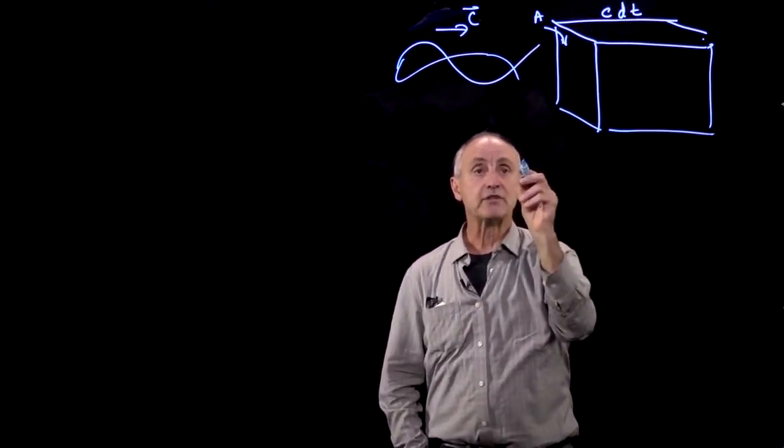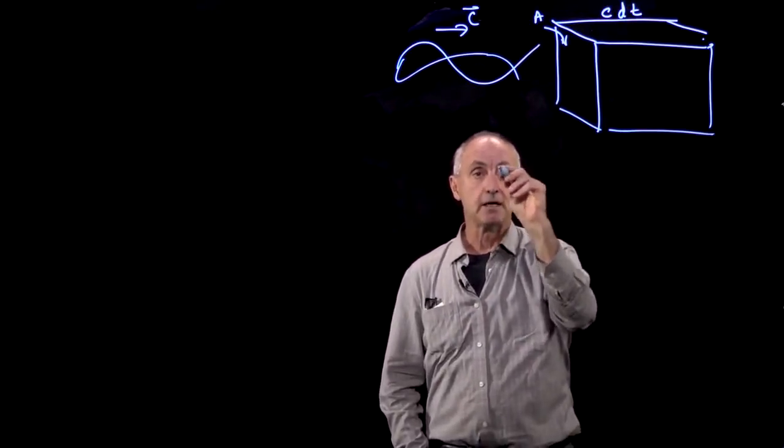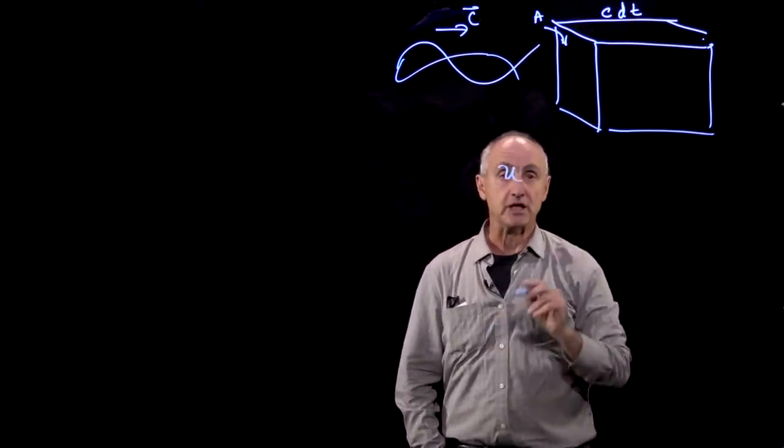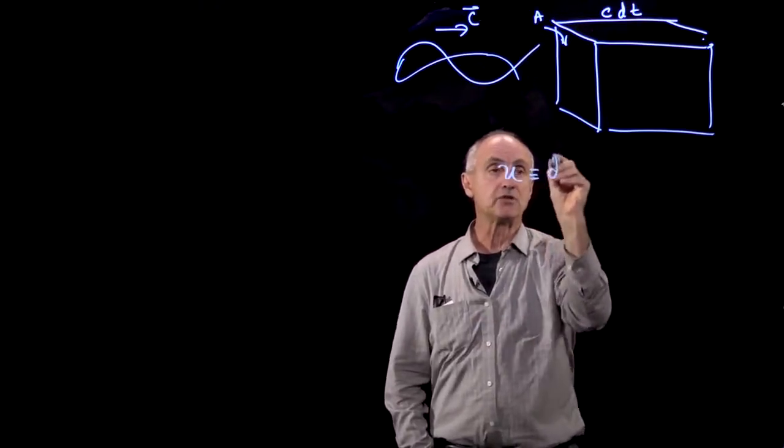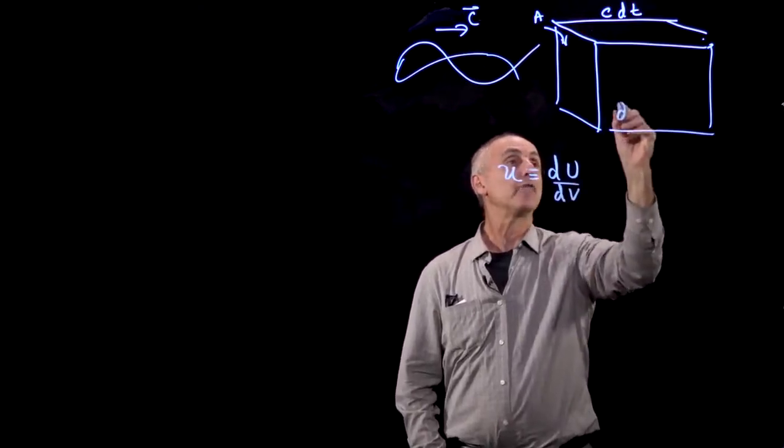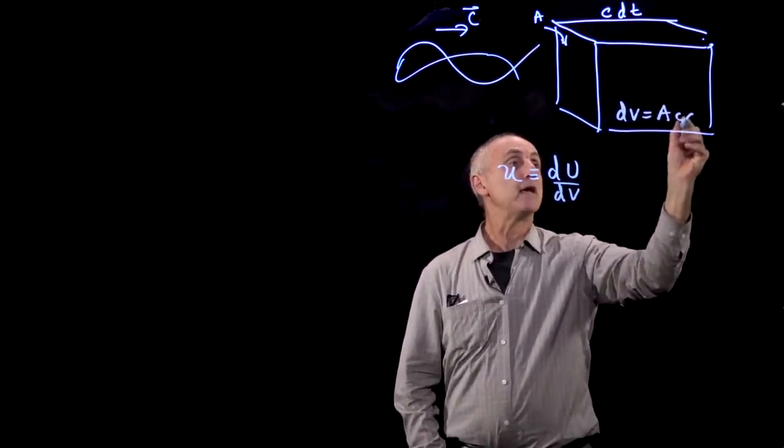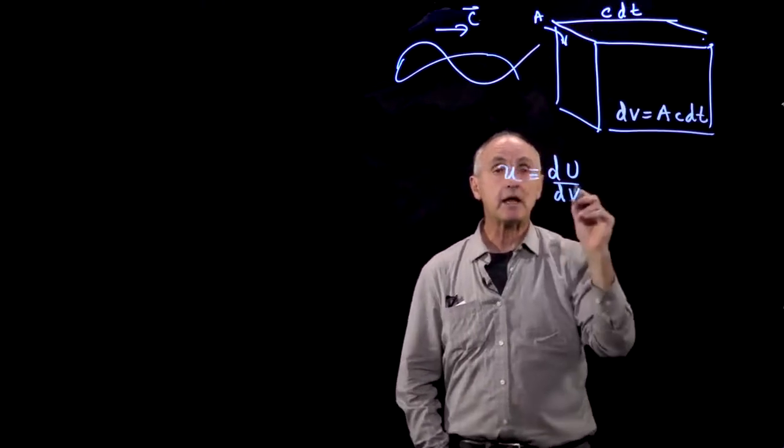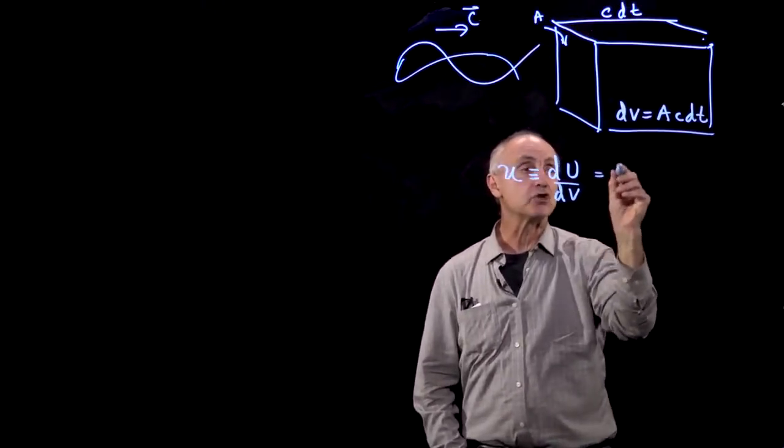What we saw was that the energy density, we'll use a little u for energy density, which by definition is the amount of energy per volume. Here our volume of space is A c dt. That energy density, by definition...